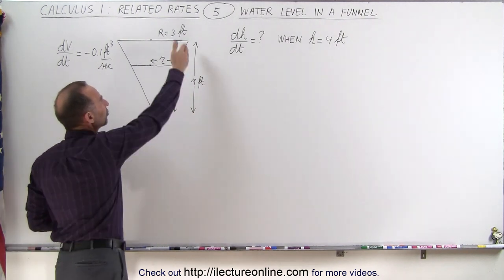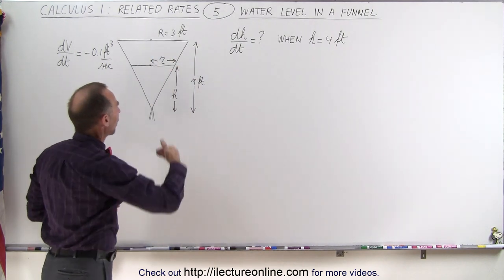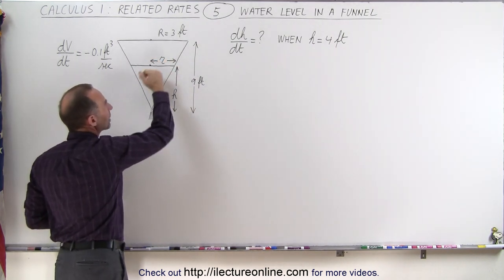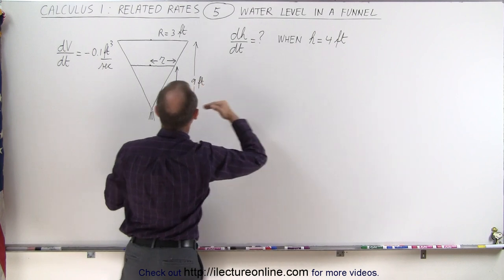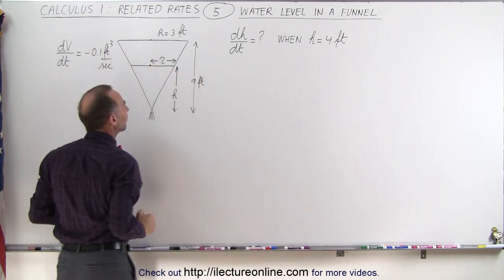The funnel is 9 feet tall and at the top has a radius of 3 feet. The water level currently is down here when h is 4 feet, in other words the funnel is filled up to a height of 4 feet above the very bottom.